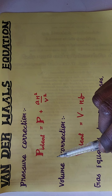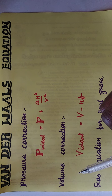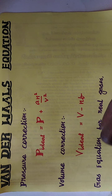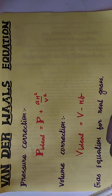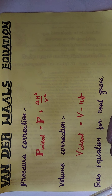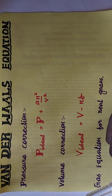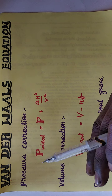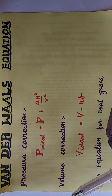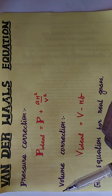We know about the ideal gas equation and under what conditions gases can behave ideally — those concepts we have seen in previous videos. We saw that no gas behaves ideally under ordinary temperature and pressure. All gases are real gases, but they can be made to behave ideally under certain conditions: low pressure and very high temperatures.